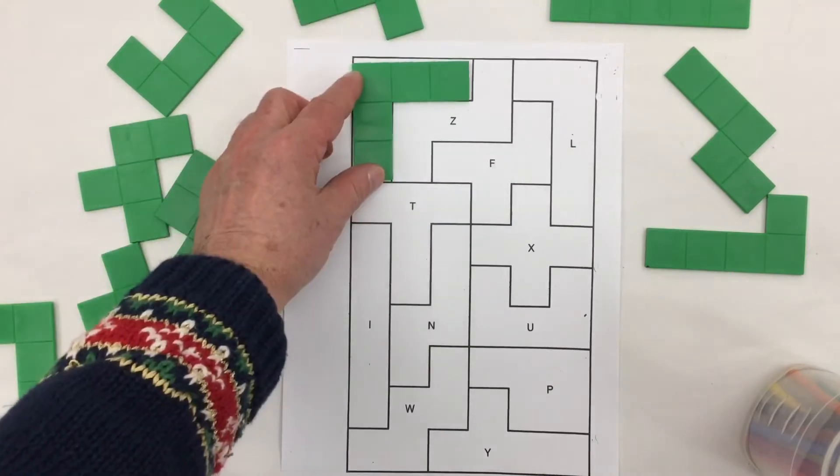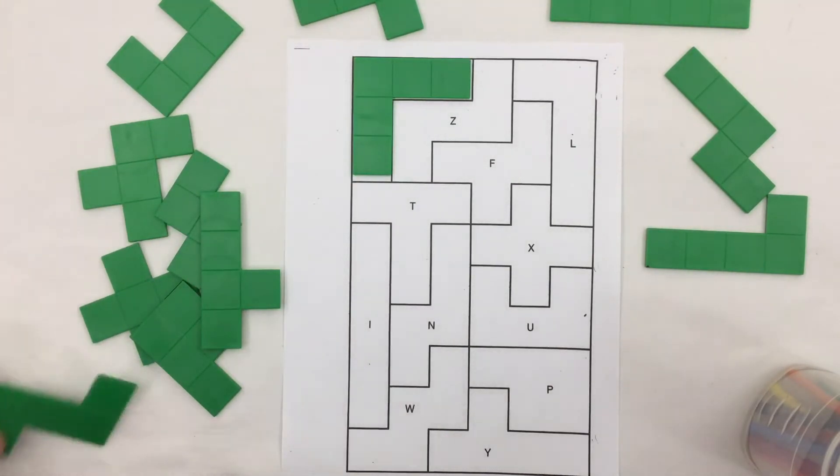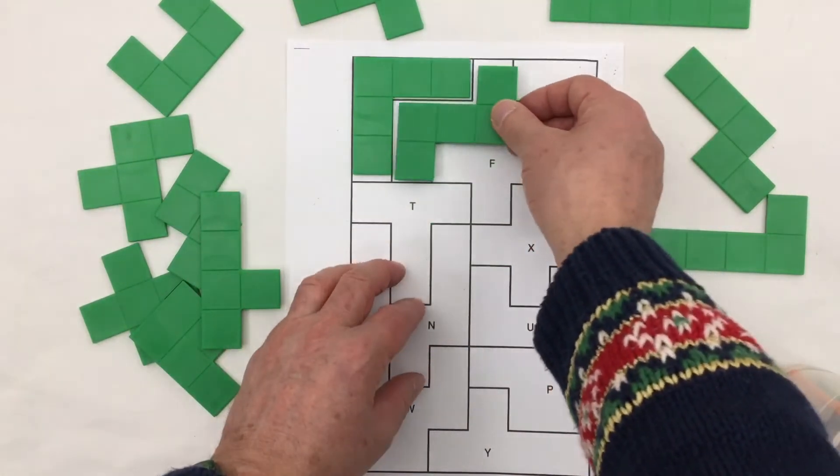So this is the V, here's our Z which has to go as turned angled.